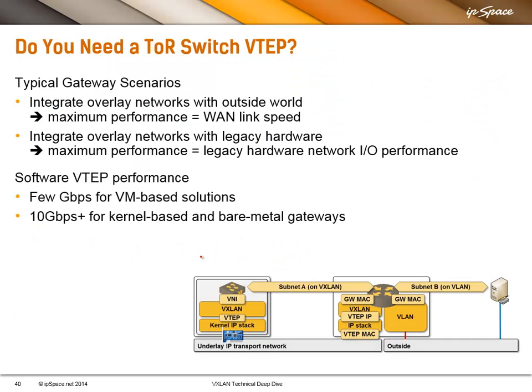You have to ask yourself: do I need a top-of-rack switch? In most cases, you don't. If you're running everything on overlay networks internally and the only physical endpoints are reachable across the WAN, then the maximum you need is WAN link speeds — tens of gigabits. And usually you need a load balancer or firewall anyway, so you don't need a top-of-rack hardware gateway for this.